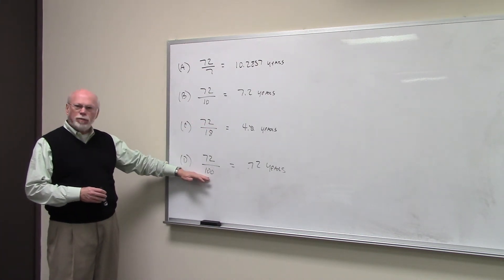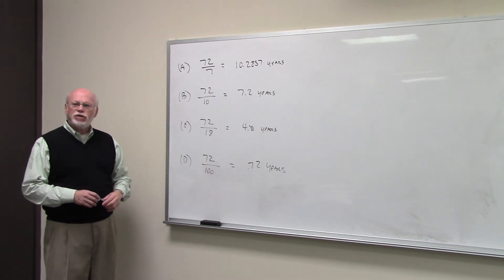And if you earn 100% on your money, how long would it take a lump sum to double? It would take 0.72 years.